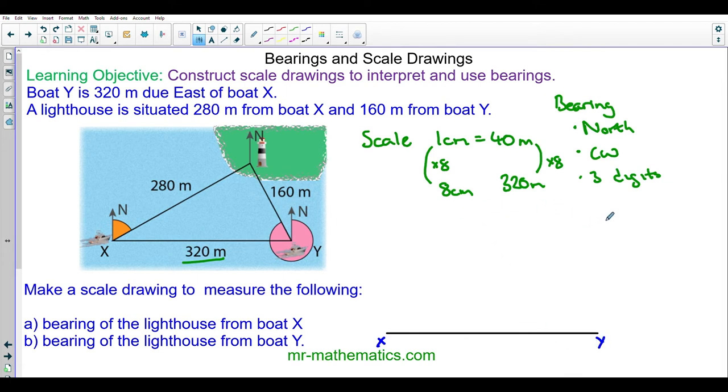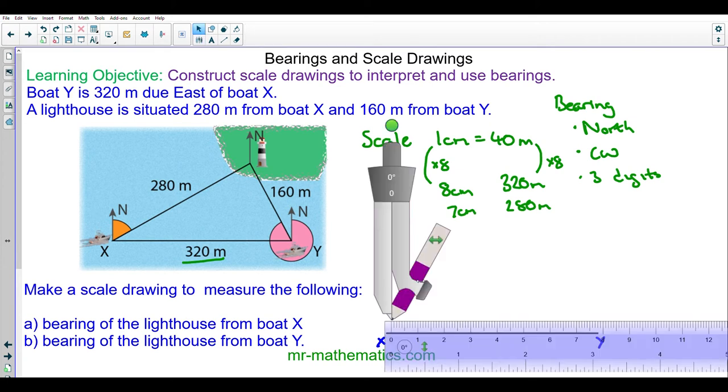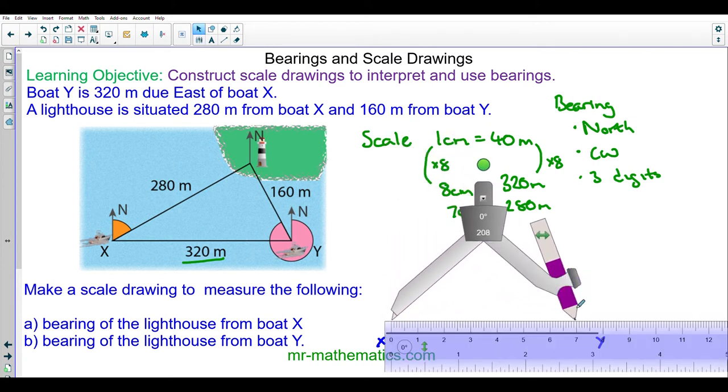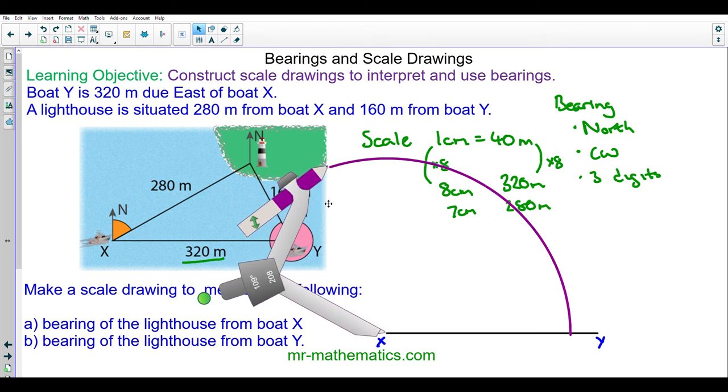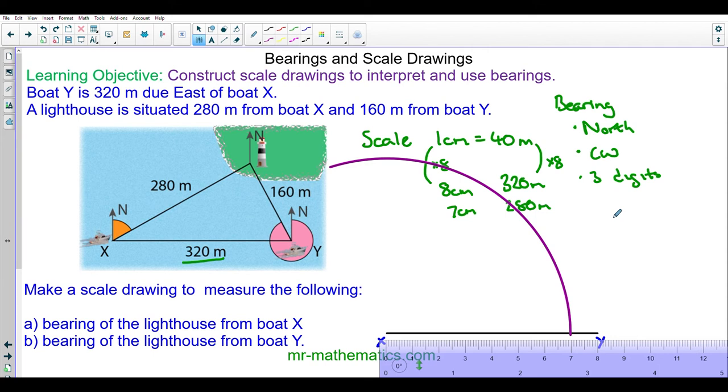Now I need 280 meters from X to the lighthouse, and 280 on our scale drawing would be 40 times 7 so 1 times 7, this will be 7 centimeters. I will open the radius of the compasses up to 7 centimeters and draw an arc from X. Next I need to draw the 160 meters which is the lighthouse from Y. Using our scale 1 centimeter equals 40 meters, I've got 160 meters so I multiply this by 4, multiply 1 by 4 and that will be 4 centimeters. So I need to draw a 4 centimeter arc from Y.